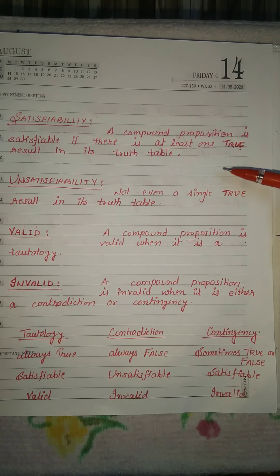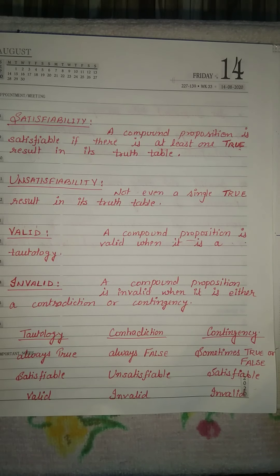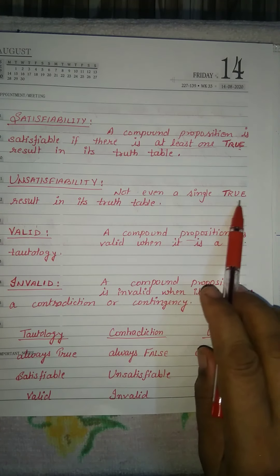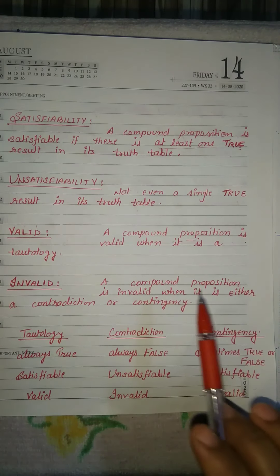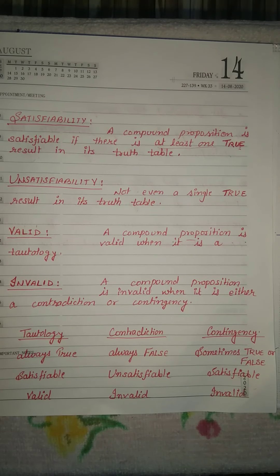In contradiction, all zeros are present in the truth table, meaning all false values are present in the truth table — not even a single true value. So contradiction is the example of unsatisfiability.